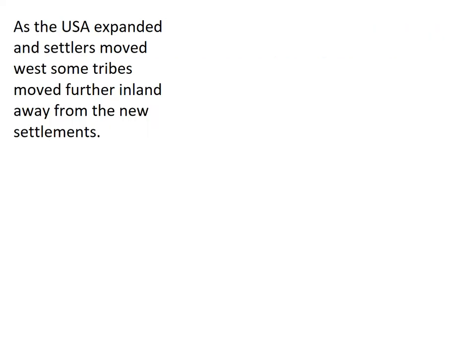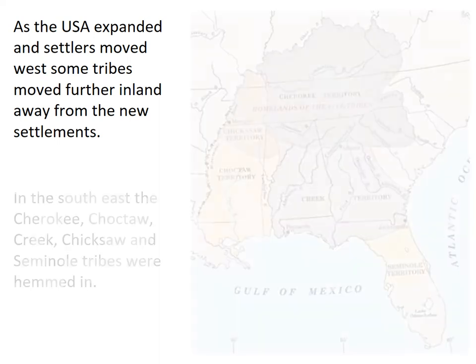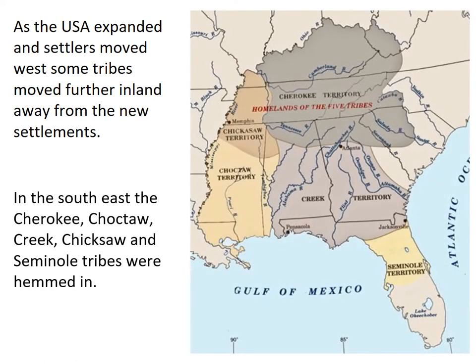As the USA expanded and settlers moved west, some tribes in the north just moved further inland away from the new settlements. But in the southeast there was a very different picture. The five tribes of the Cherokee, the Choctaw, the Creek, the Chickasaw, and the Seminole were pretty much hemmed in as slavery grew up around them. What happens to these five tribes, often known as the five civilized tribes, is quite horrific, and I'd like to look at how the US government systematically tried to remove them from the southeast between really 1790 and 1840.